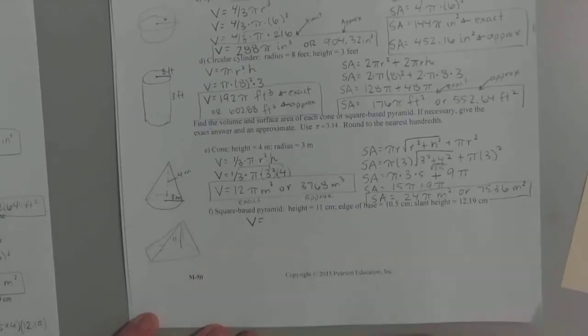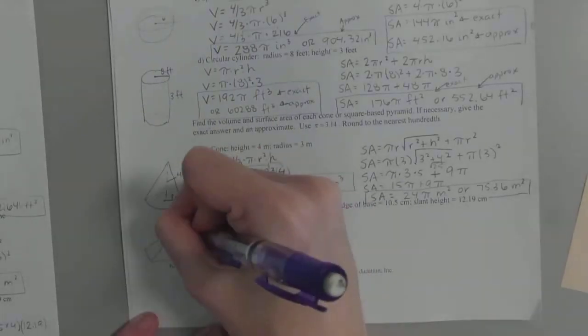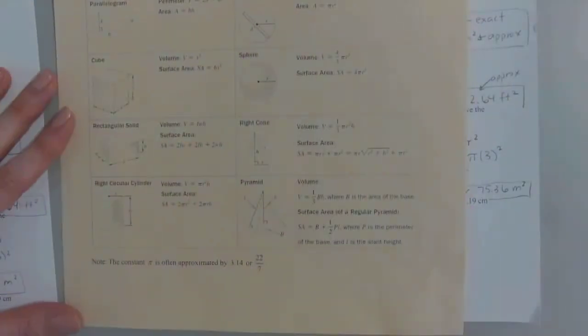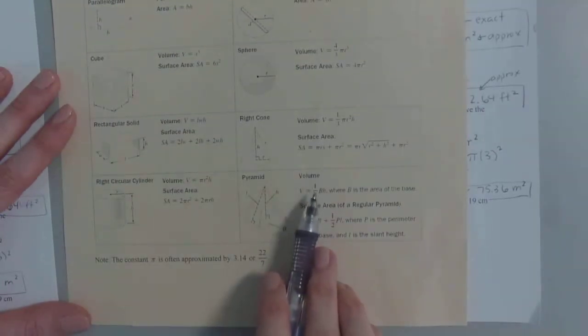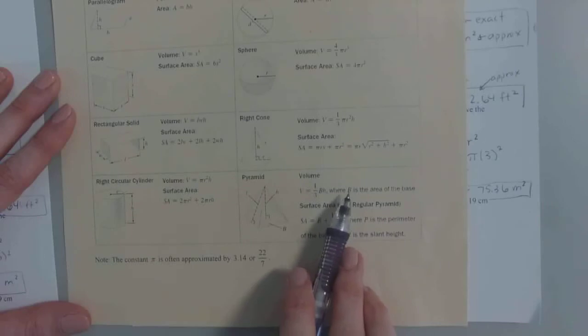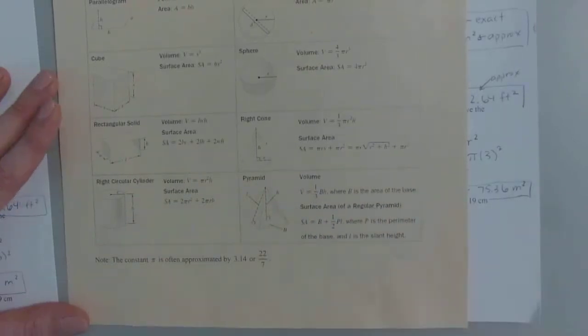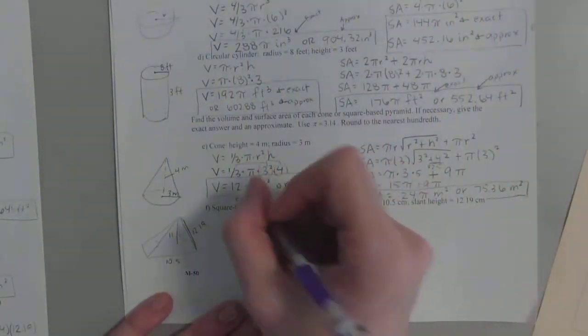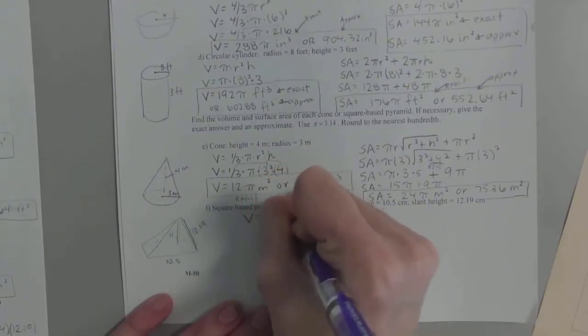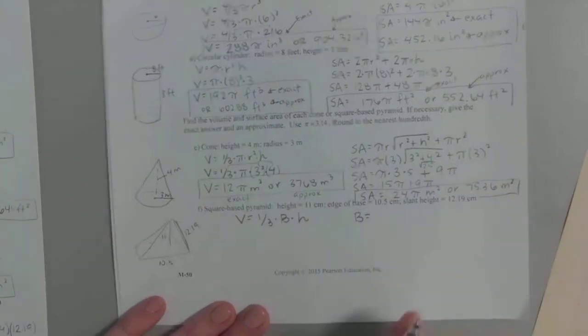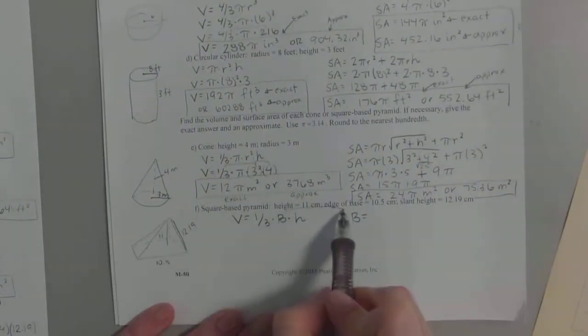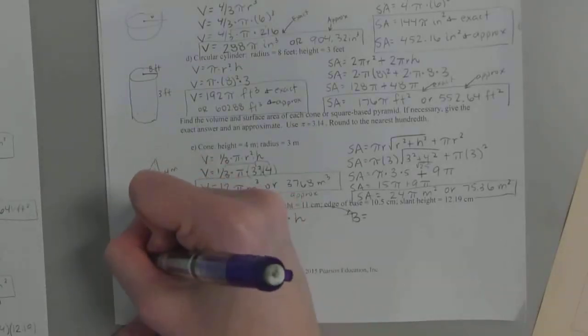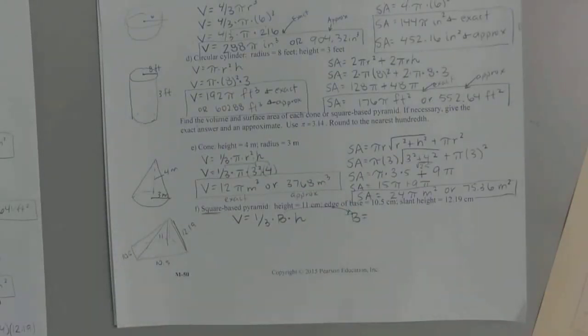We're trying to draw a square base pyramid. Okay. So we have the height is 11. The edge is 10.5. And the slant height here is 12.19, okay? All we care is that it's all told to us. So the volume of a pyramid is 1/3 big B times H, where big B is the area of the base because pyramids can be built on a triangle, it can be built on a hexagon, okay? So what we're going to do is we're going to do V equals 1/3 times big B times little H, but over here we'll figure out what big B is first, okay?